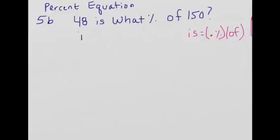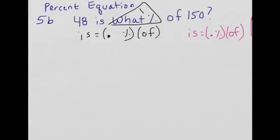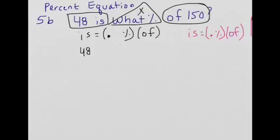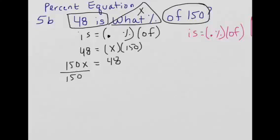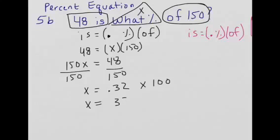Formula: is equals percent (as a decimal) times of. I don't know the percent, so that's x. My total (of) is 150, and my part (is) is 48. So: 48 equals x times 150. Show your algebra: 150x equals 48. Divide by 150, and x equals 0.32. Remember we're looking for percent, so multiply by 100 — x equals 32 percent.